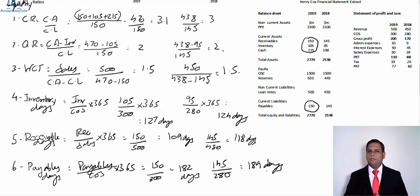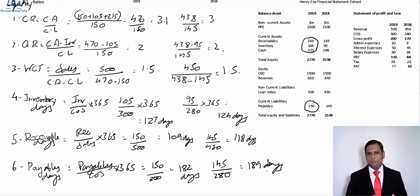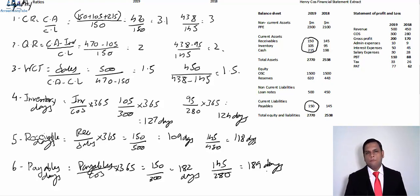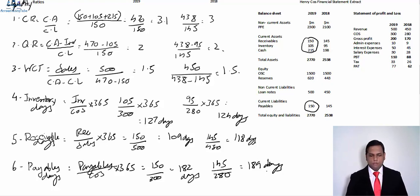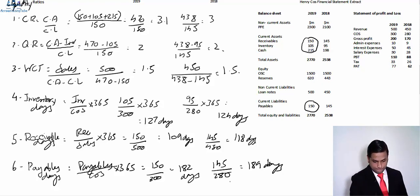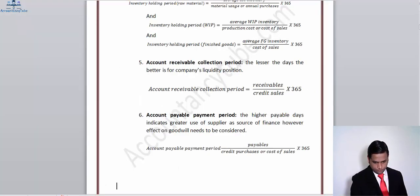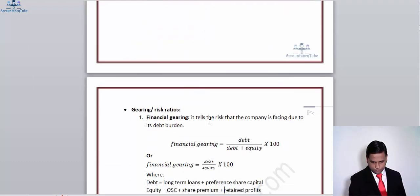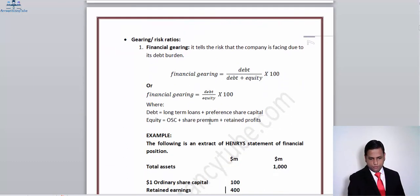This ratio shows that creditors are being paid sooner than before, which is not ideal — the company could have used that extra credit period as a source of finance to support sales. However, from the current ratio it is clear the company does not need to delay payments to support current assets, as it already has sufficient resources. That's all the liquidity ratios for Henrico. There is not much movement overall, and except for inventory, the company does not need significant improvement in other areas. Now let's move on to gearing and risk ratios.